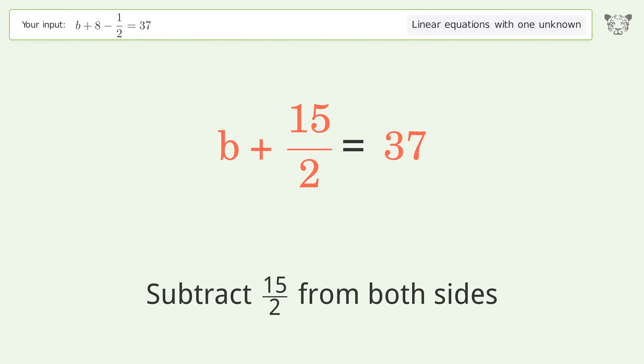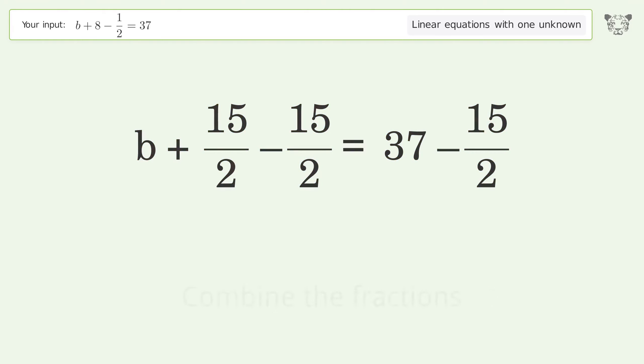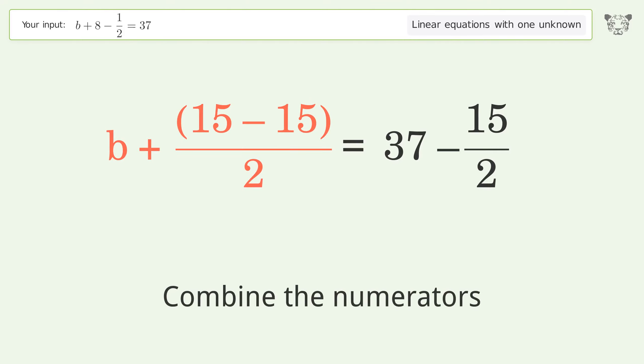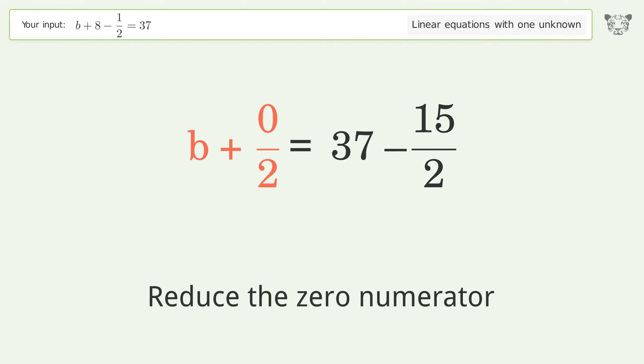Group all constants on the right side of the equation. Subtract 15 over 2 from both sides. Combine the fractions and combine the numerators.